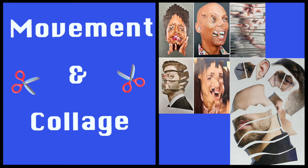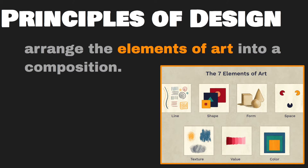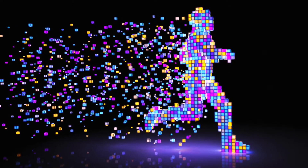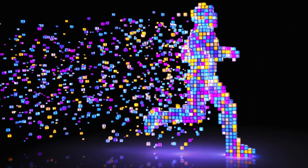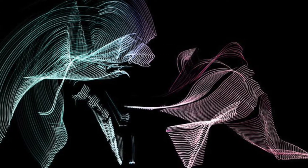The principles of design arrange the elements of art into a composition. As I always mention in class, the elements of art are like ingredients — just like you need good ingredients to cook a delicious meal. If you want to create interesting artwork, you need to add different elements of art. The principles of design are like recipes: they guide you on how to use those ingredients successfully in visual art.